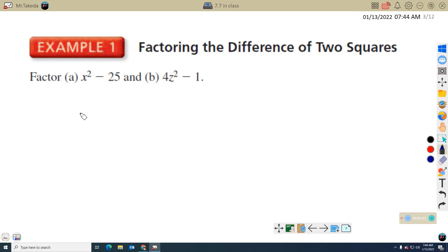Example 1, factoring the difference of two squares. Okay, so x squared minus 25. Well, that's going to equal the square root of the first term is x. So x and x. Plus and minus. The square root of 25 is 5. So 5 and 5. That's it. 4z squared minus 1. Now remember, 1 is a perfect square. It's 1 times 1. 4 is also a perfect square, and z squared is a perfect square. So in order for a term to be a perfect square, every factor in there has to be a perfect square. Okay, so the square root of 4z squared then would be 2z. So 2z and 2z plus and minus the square root of 1 is just 1. Okay, so there's your examples for factoring the difference of two squares.